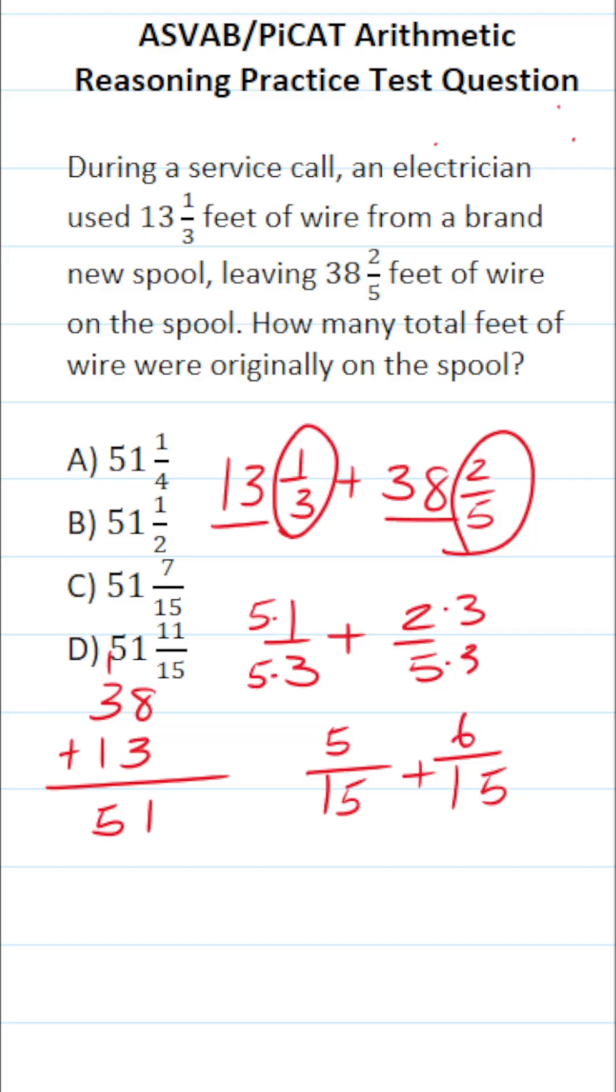so this is 6 over 15. When you add fractions, you keep the denominator the same, but you add the numerators. This becomes 5 plus 6, which is 11 over 15.